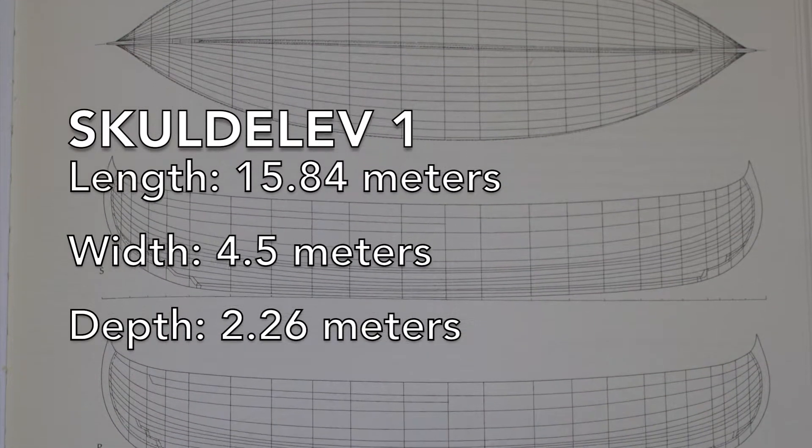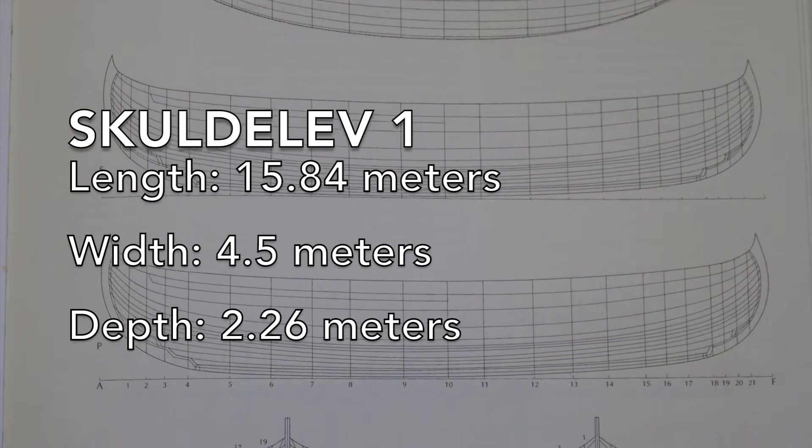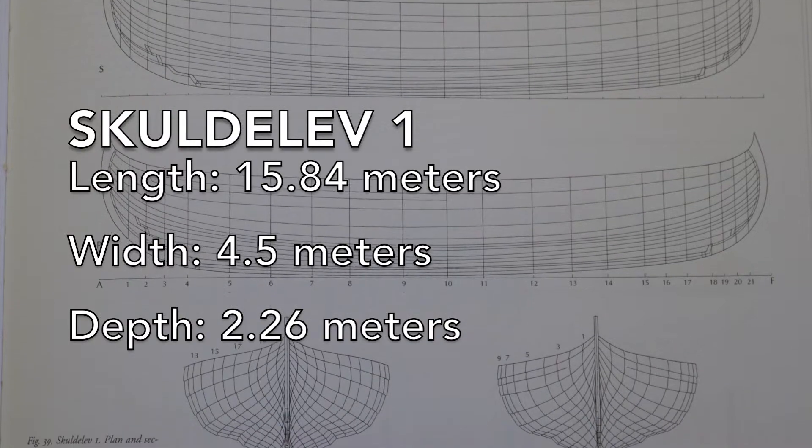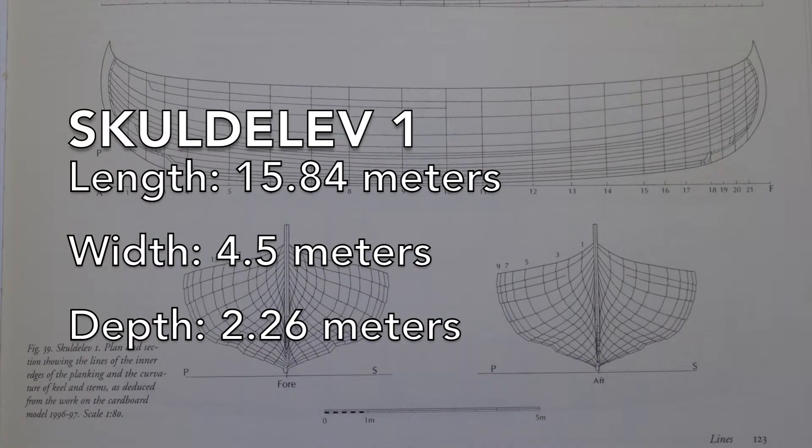Skuldelev I, the knarr, has a length of 15.84 meters, a width of 4.5 meters, and a depth of 2.26 meters, and a mostly rounded hull.